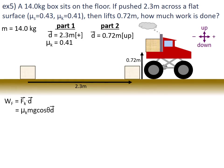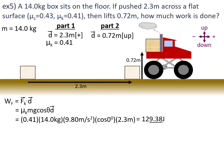We know everything that goes into that formula, so we can solve for the work done against friction: μ_k = 0.41, mass = 14.0 kilograms, gravity = 9.80 metres per second squared, cos of zero because it is being pushed along a flat surface, and it was pushed a distance of 2.3 metres. So work that went into friction is 129.38 joules.